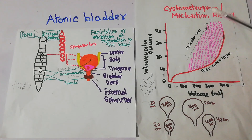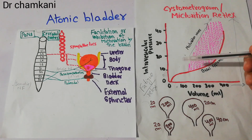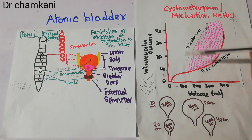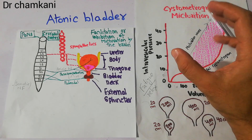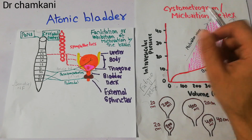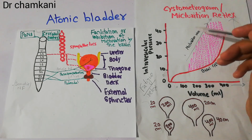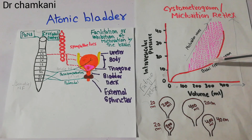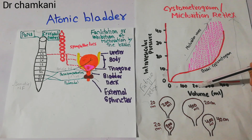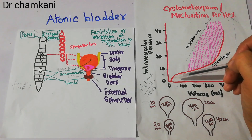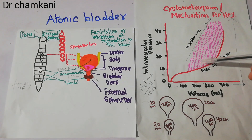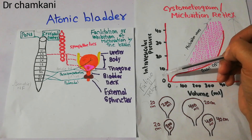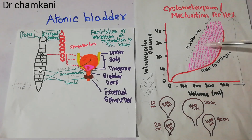The micturition reflex basically means that the urinary bladder starts contracting. There are micturition waves or micturition contractions which cause the urinary bladder to contract. These waves increase when the volume of urine in the bladder increases. As the volume of urine increases, the micturition waves keep on increasing and their intensity — the pressure of contraction of the urinary bladder — also increases.